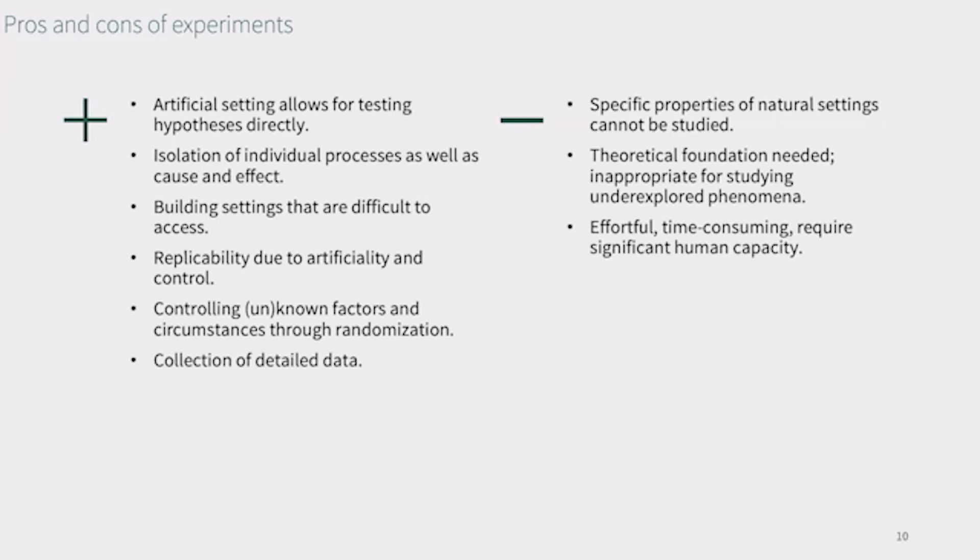In the example of the crossing, we mentioned that we could look at the behavior of crossing the street without the influence of time pressure that may have had an unintentional effect on the results besides the hypothesized main effect. In experiments, we may also build settings that would normally be really hard to access and make behaviors observable that would otherwise be hidden.